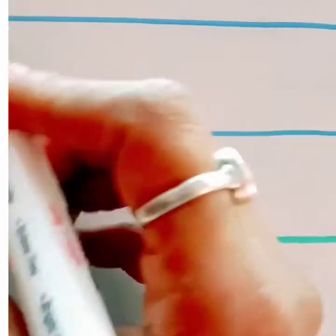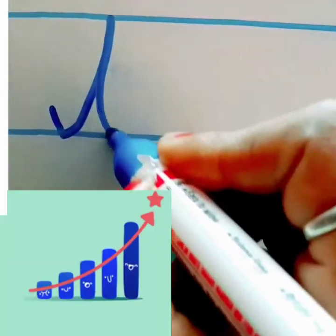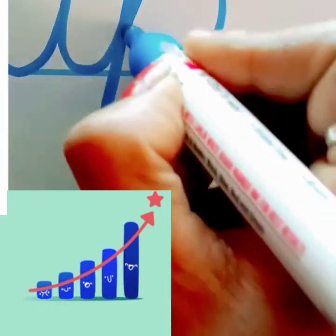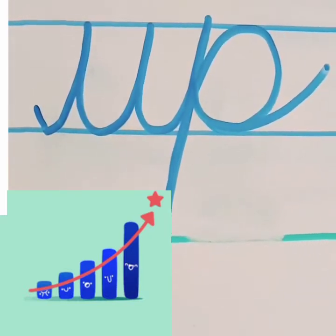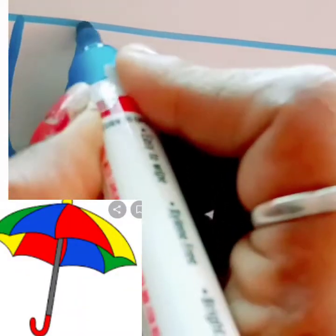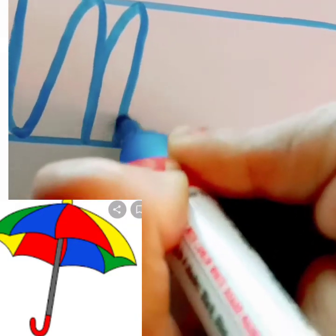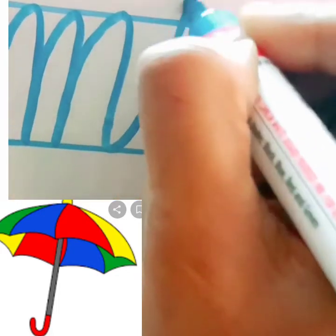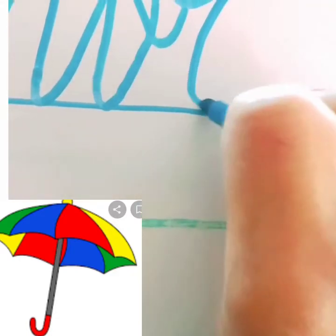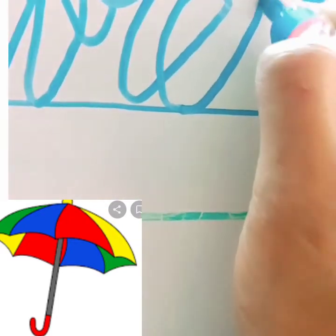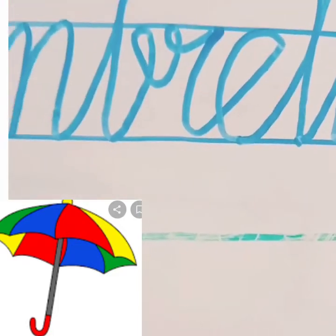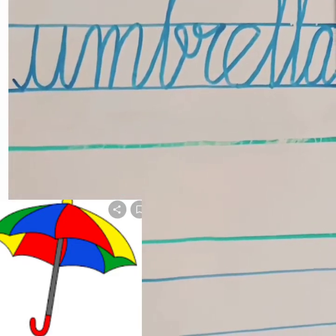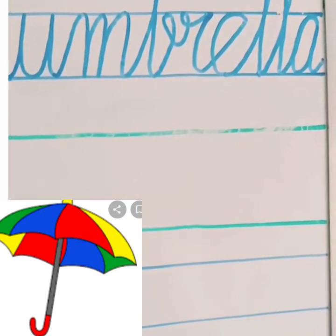U for up. U, P, up. You can see a sign that is showing something is going up. And also U for umbrella. U, M, B, R, E, double L, A, umbrella. It will be very difficult for you, so you need to practice a lot. Eight letter word.